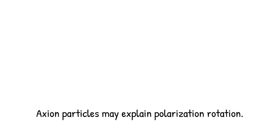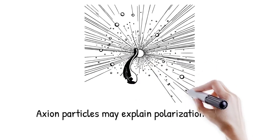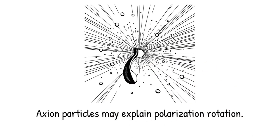Axion-like particles, predicted by some string theories, could cause polarization rotation over cosmic distances, explaining the effect. It's like hearing a strange harmony in a symphony you thought you knew perfectly. What's the hidden instrument?